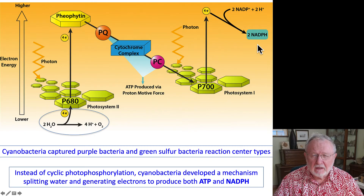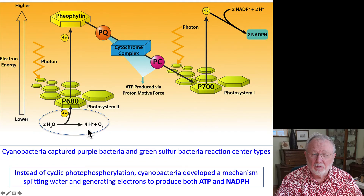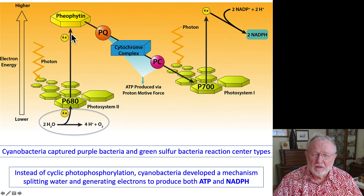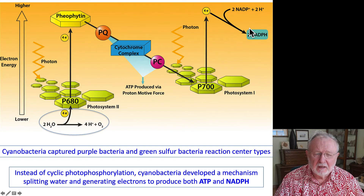In addition to the coupling of these two photosystems, what we find is that the system is now oxygenic. At the base of photosystem II, water is split to form protons and diatomic hydrogen, and those electrons then pass through photosystem I and photosystem II and are ultimately used to reduce NADPH.